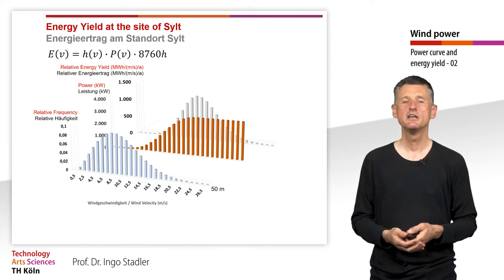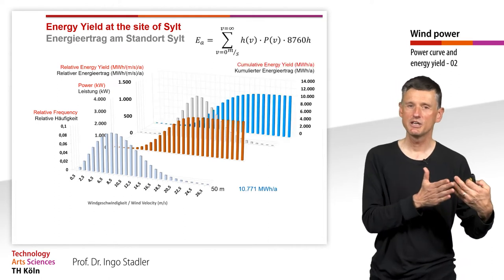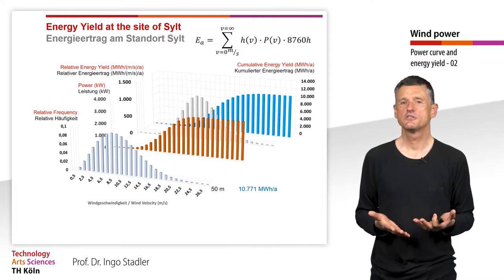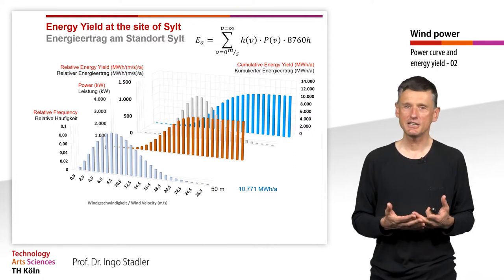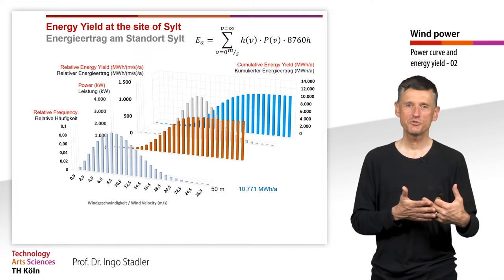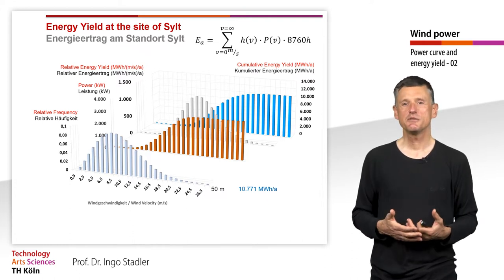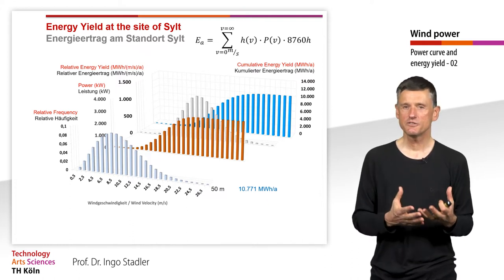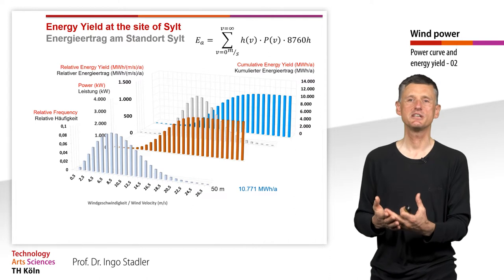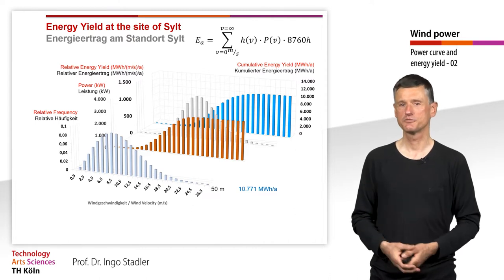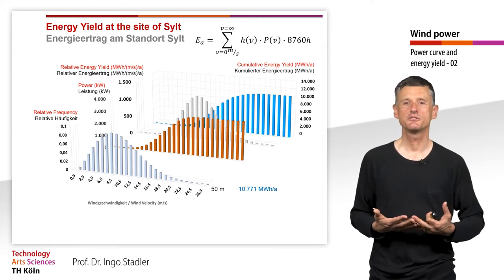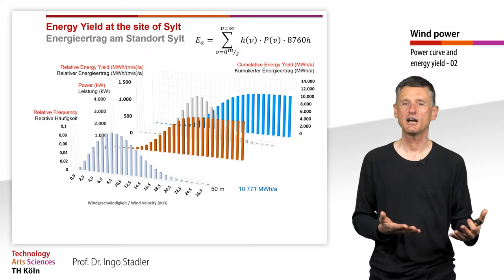What we are interested in is the cumulative energy — the energy we can obtain in one year — shown in the fourth graph. The yearly energy yield Ea is the sum from zero to infinity of the relative frequency h(v) times the power output p(v) times 8,760 hours. In this example, we get a yearly energy yield of 10,700 MWh per year.